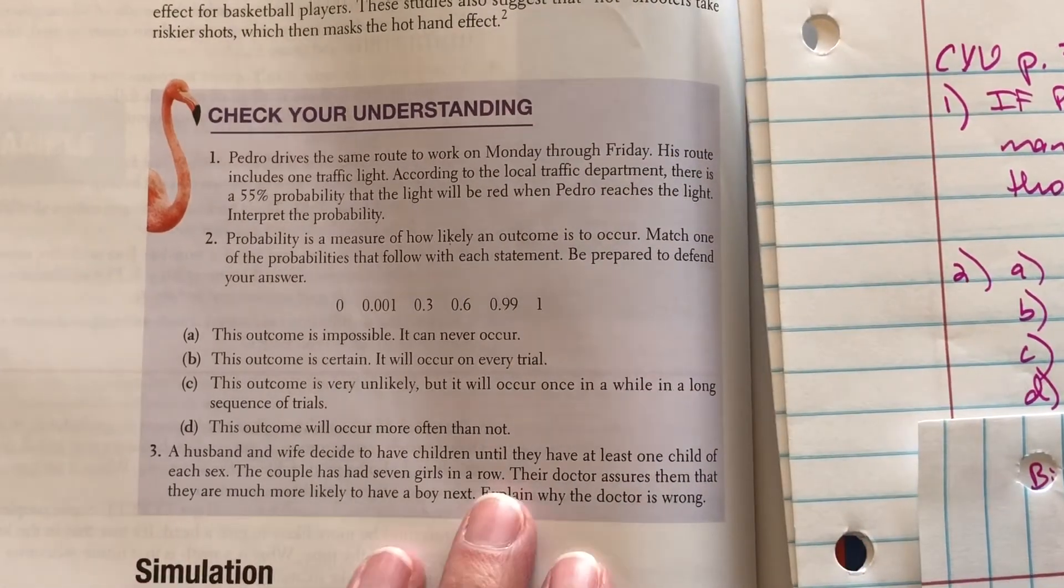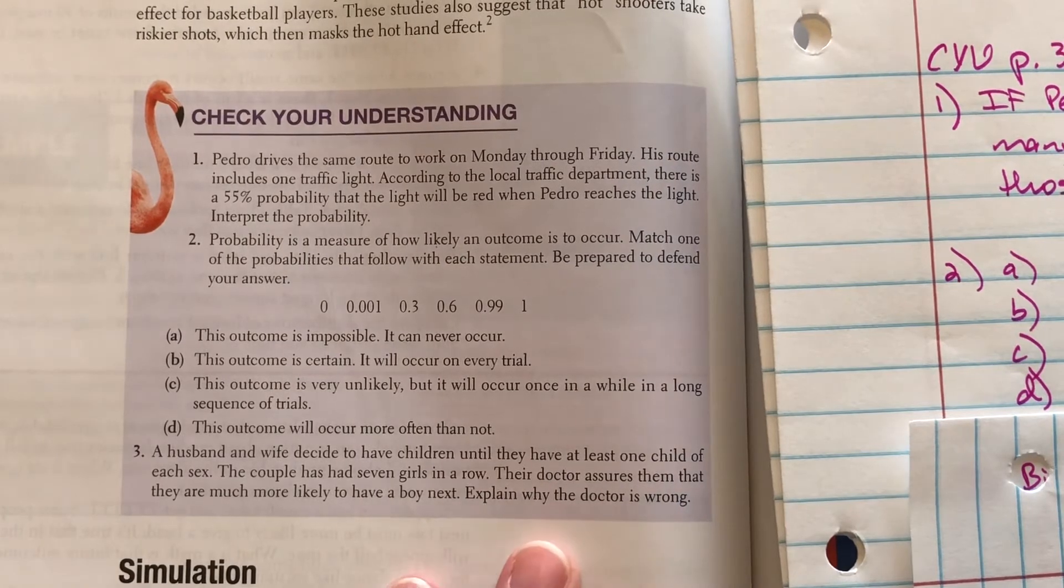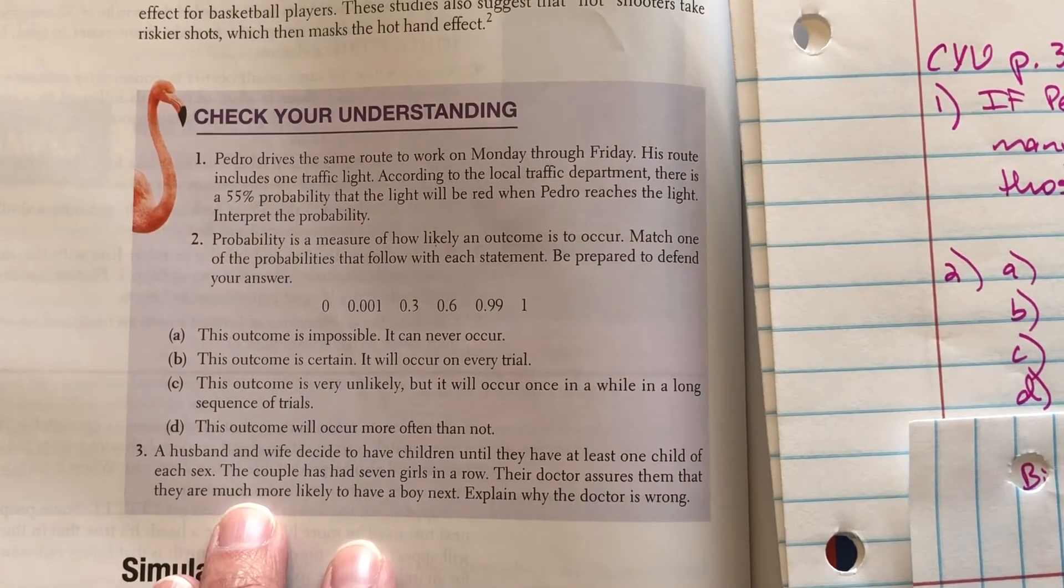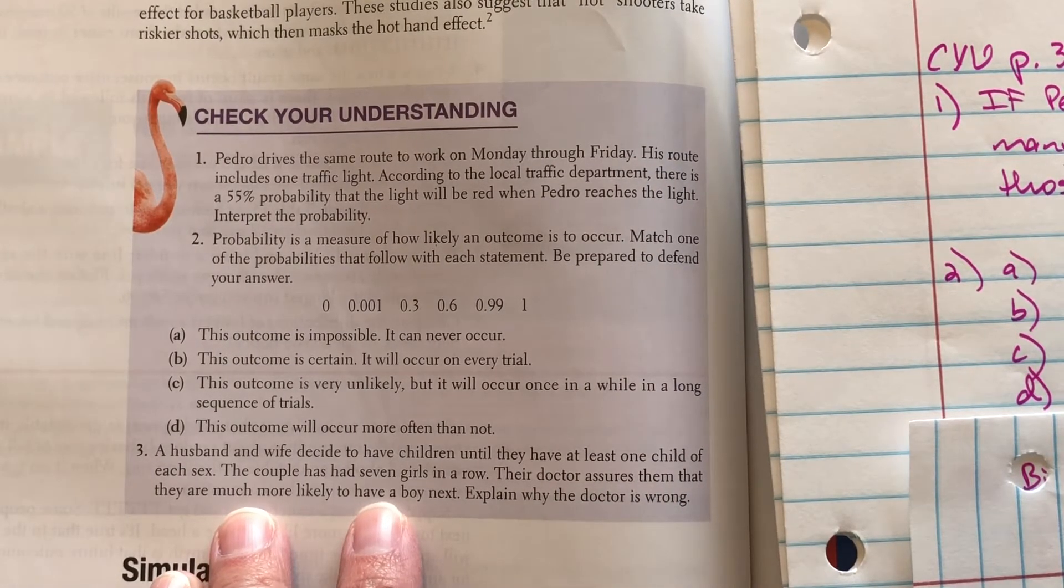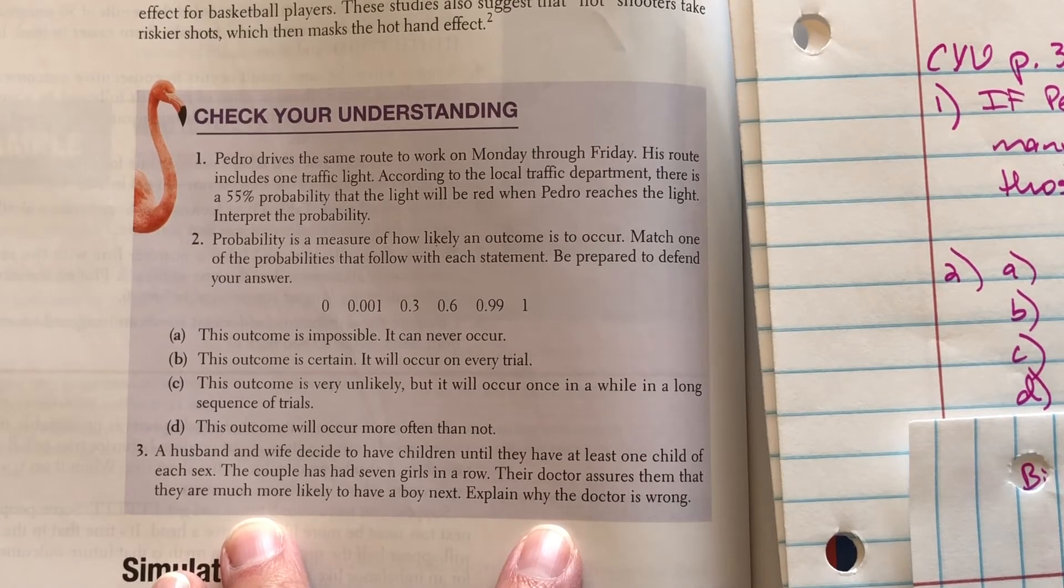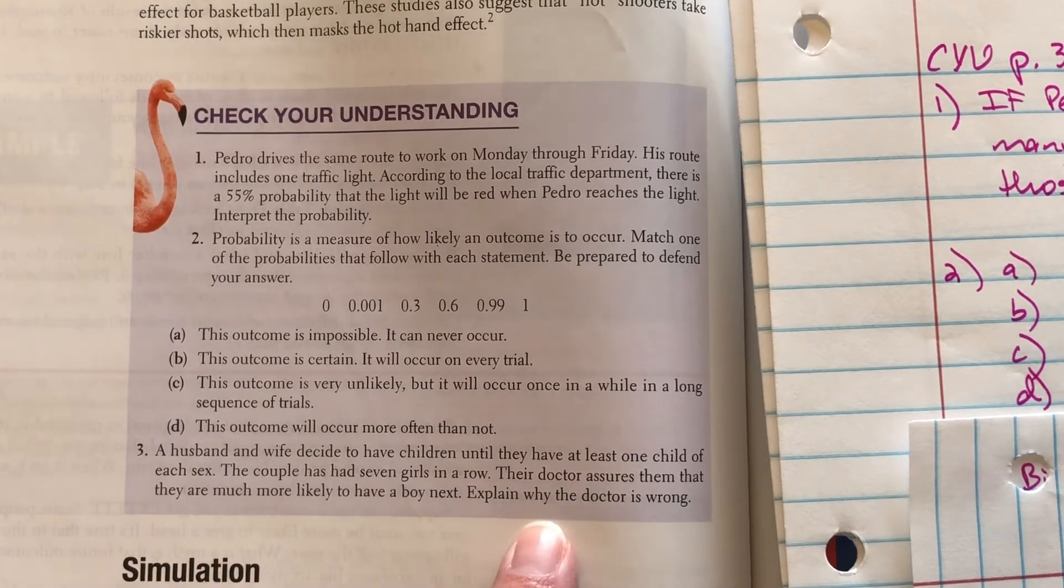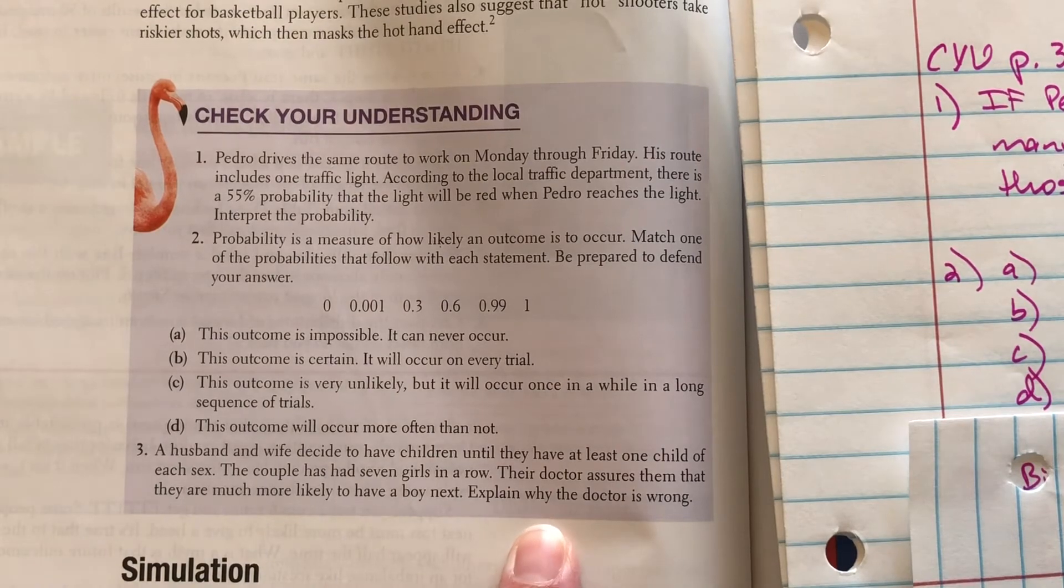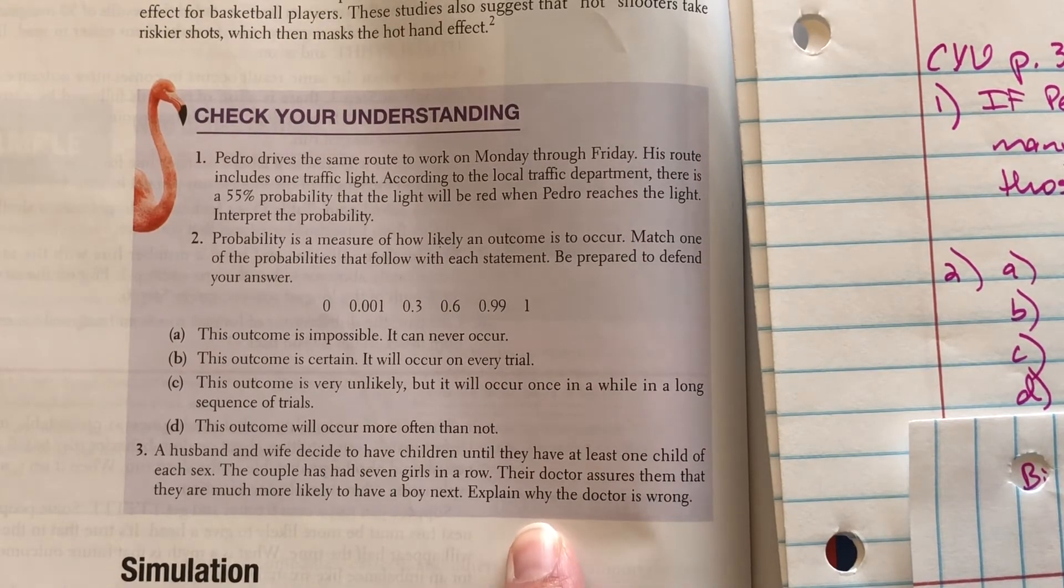All right, last question. A husband and wife decide to have children until they have at least one child of each sex. The couple has had seven girls in a row. Their doctor assures them that they are much more likely to have a boy next. Explain why the doctor is wrong. Now, if my doctor said this to me, I'd find another doctor.